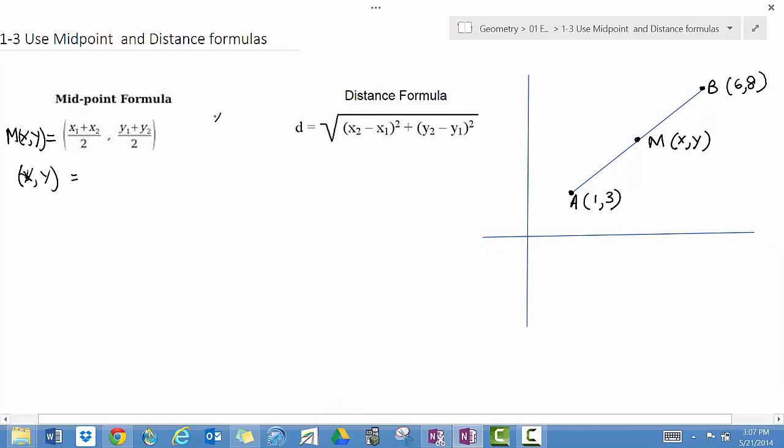I'm going to write my points: x₁, y₁ is (1, 3), and then right below it, x₂, y₂ is (6, 8). I'm going to remember that if I want to find the midpoint, I add them.